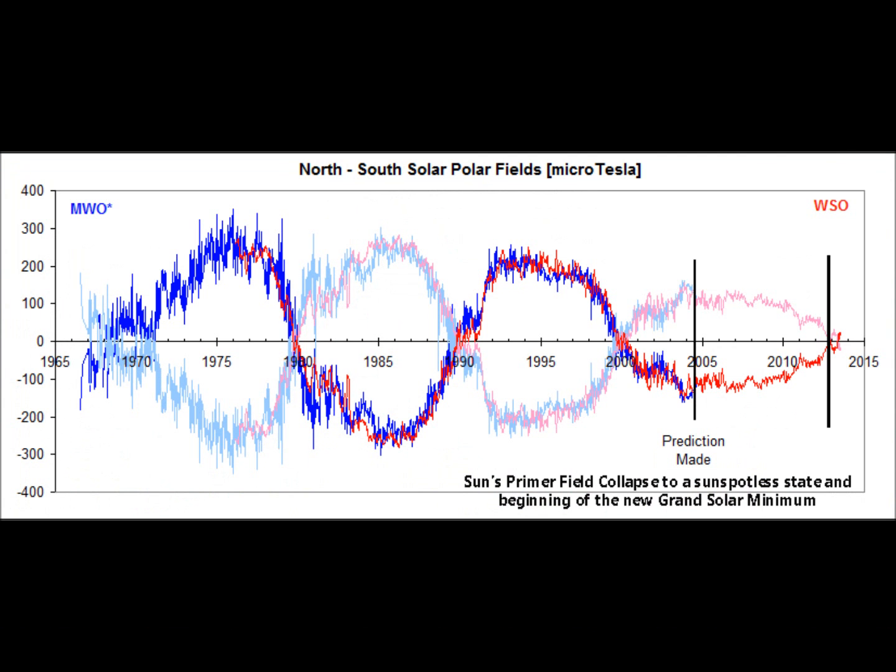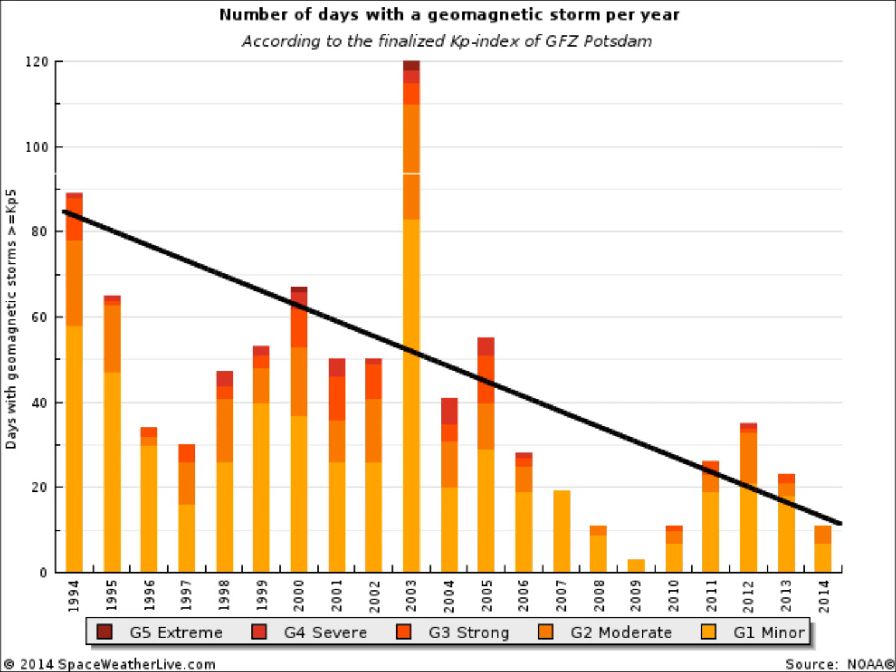Adding yet another piece of evidence that we are going into a cooler phase right now: the north-south solar polar fields. A prediction was made that the sun's polar field would collapse, ushering in a sunspot-free surface and a new grand solar minimum. Also, the total number of days with geomagnetic storms per year is on a downtrend, as you can clearly see with the black line.